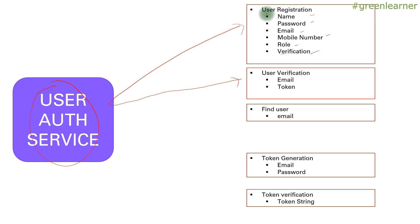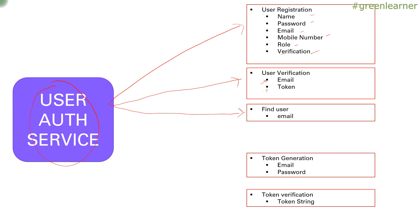While registering the user, we are going to create a unique token to verify the user for each role. The user verification endpoint is going to take the email and token — the unique code which is going to verify the user for a specific role. The third endpoint is to find the user by email; if you find that email you can get the information about that user.